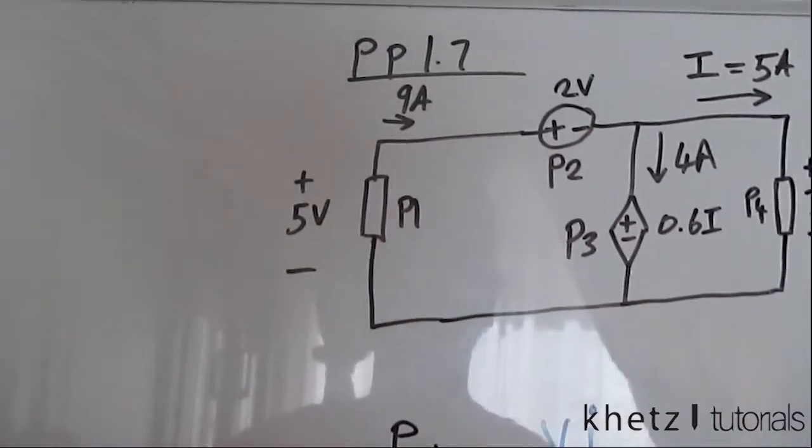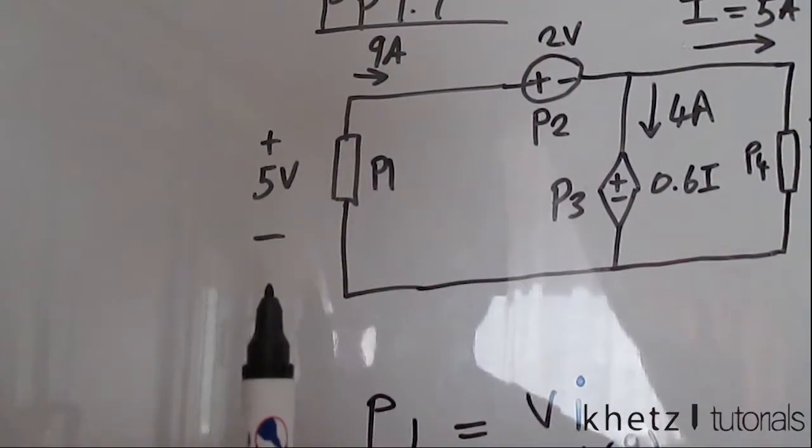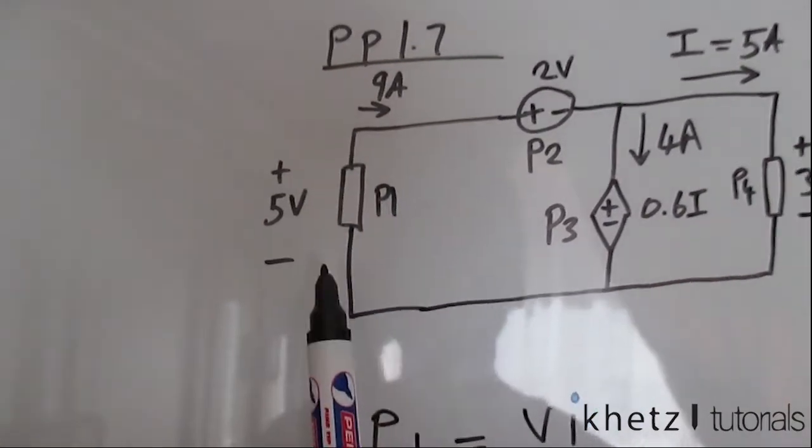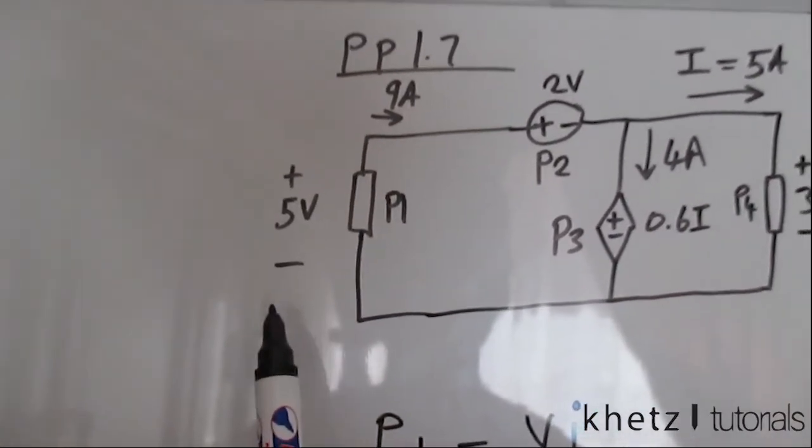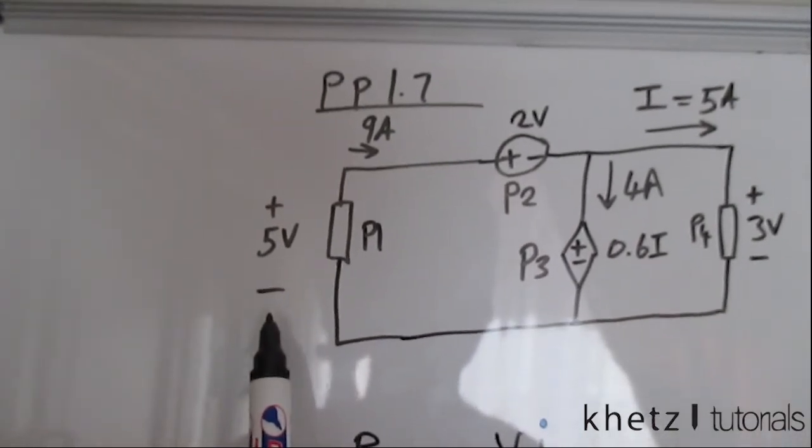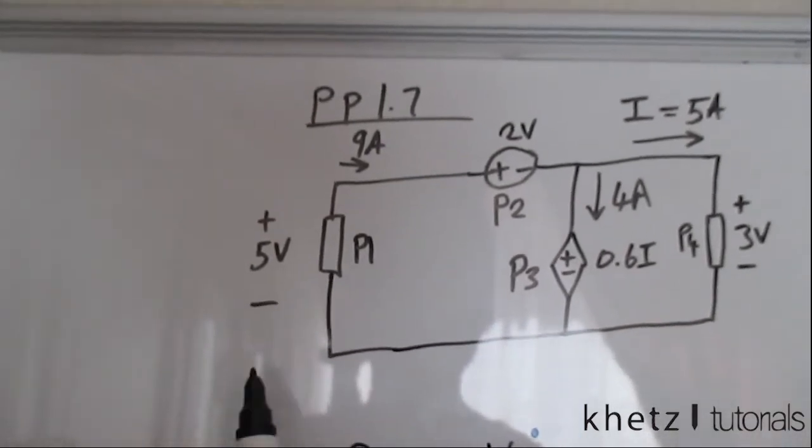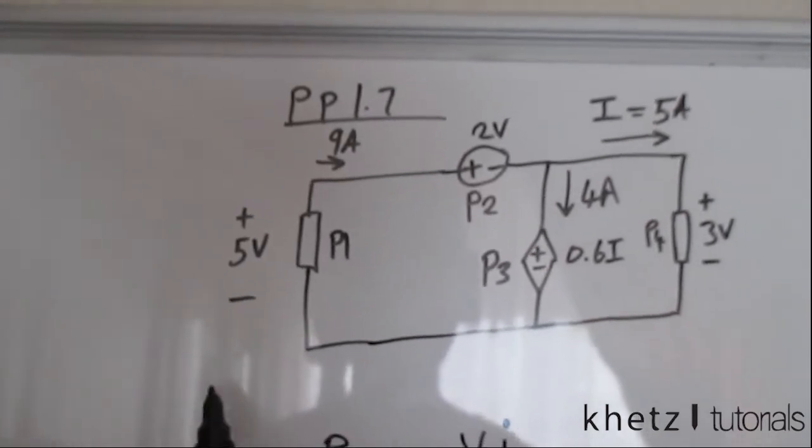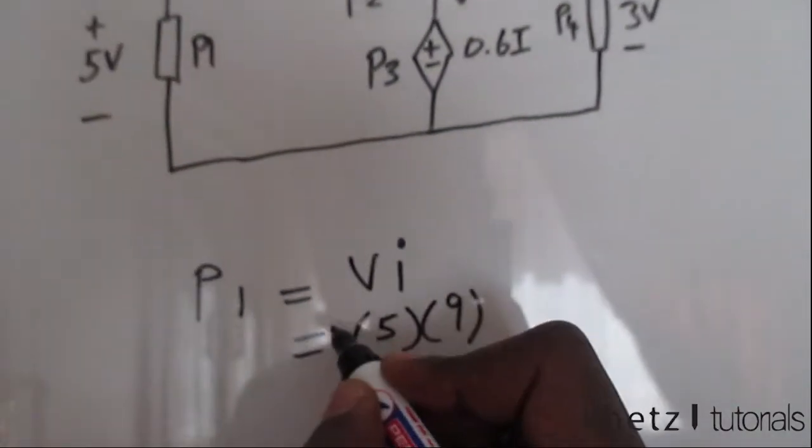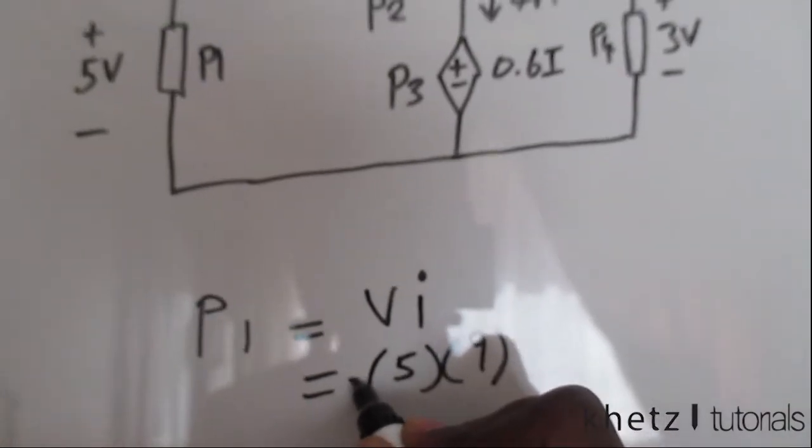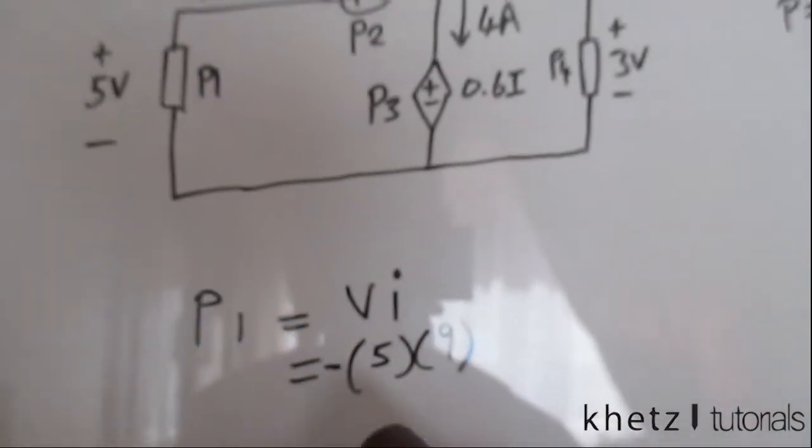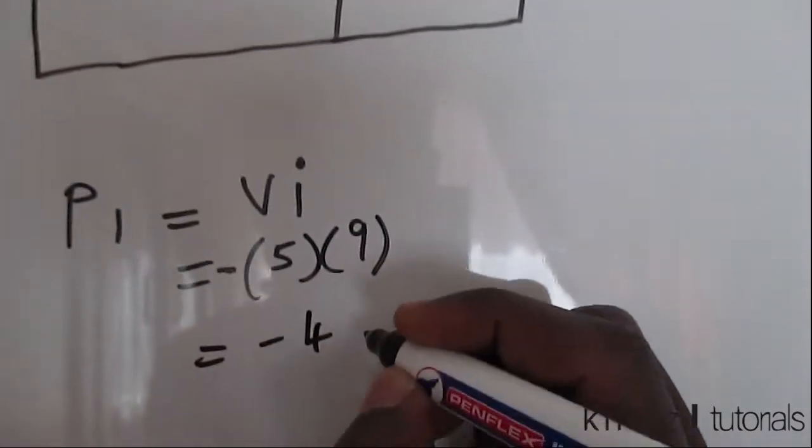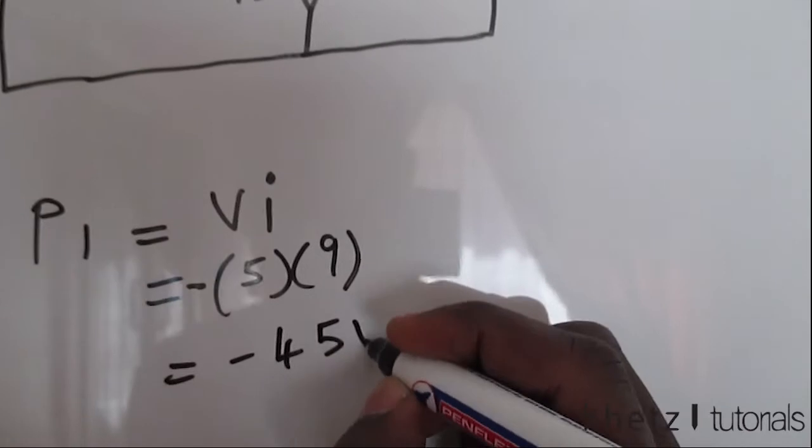Now, if you look here, this current starts off from the negative side of the voltage. So it passes through the negative terminal of the voltage first, which means we introduce a negative sign there. And now our answer will be negative 45 watts. And that is the power which is associated with this particular element.